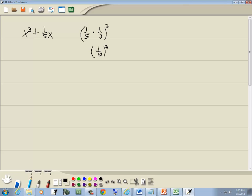Well, that gives us one-tenth squared, which gives us one over a hundred. So this is the constant they're asking about.